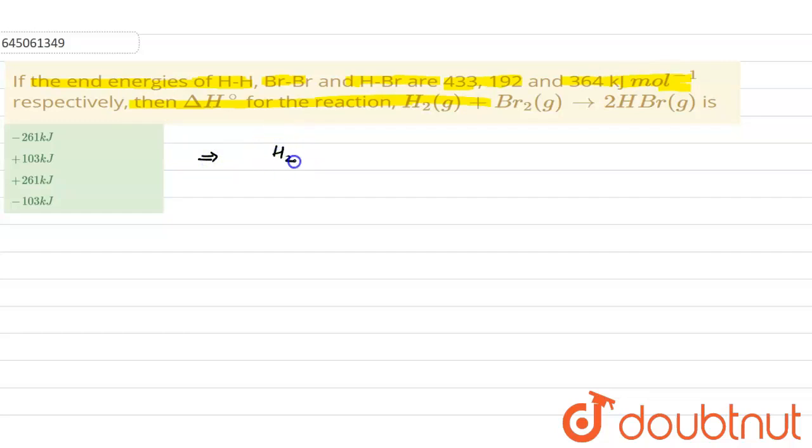The given reaction is H₂ plus Br₂ gives you twice of HBr. In terms of bond energy, the enthalpy of reaction is given as bond energy of reactant minus bond energy of product.